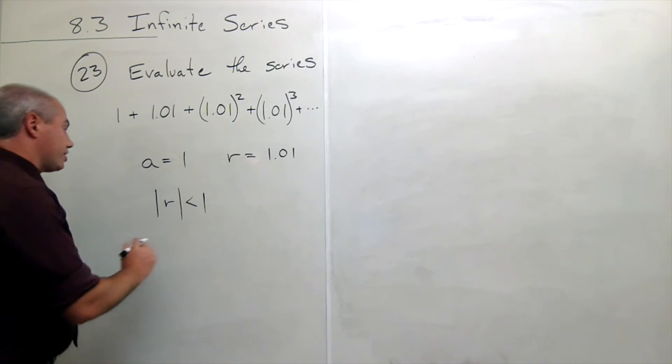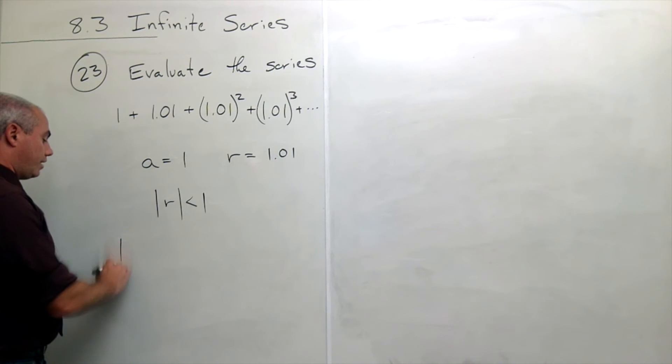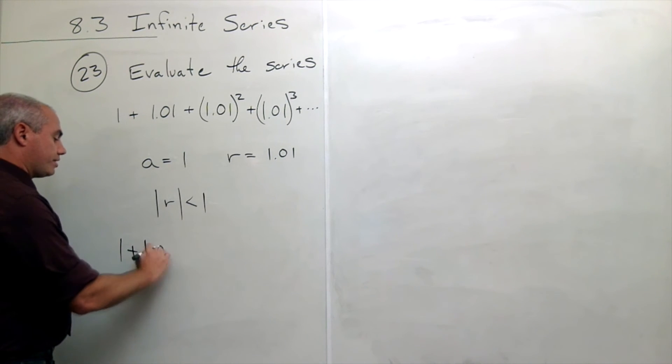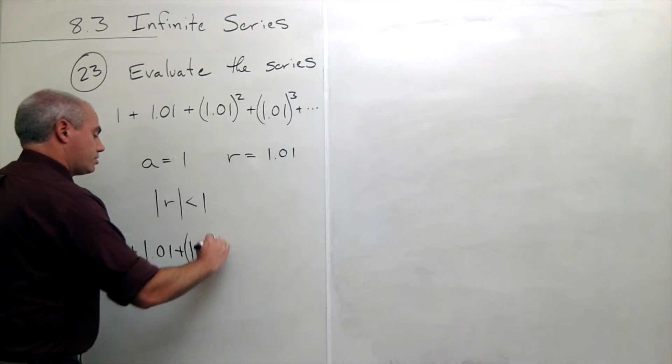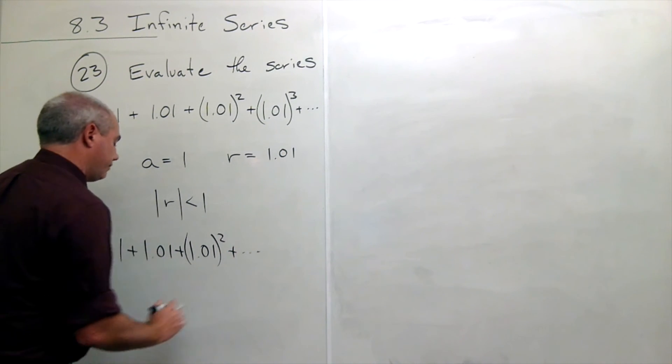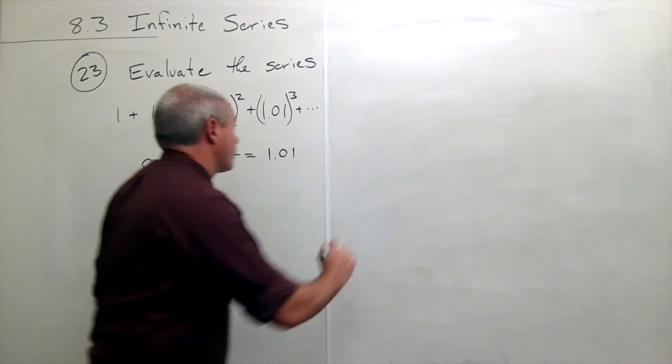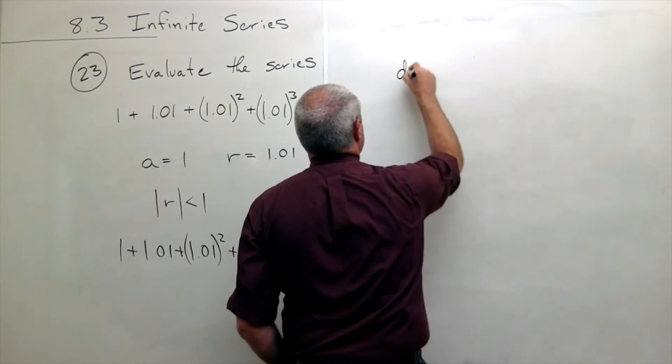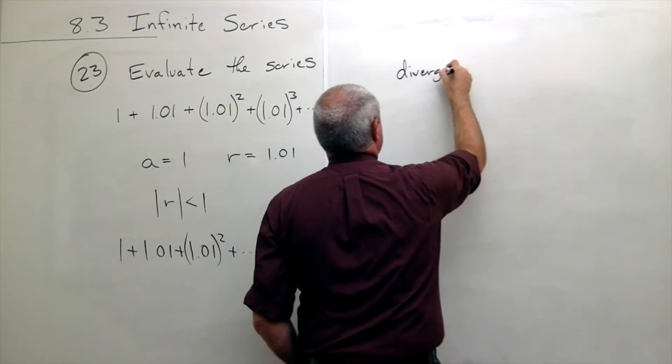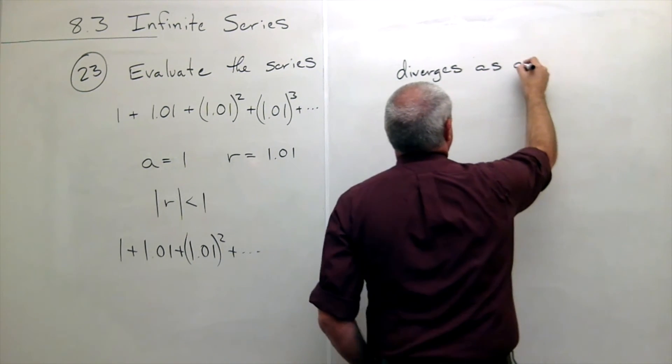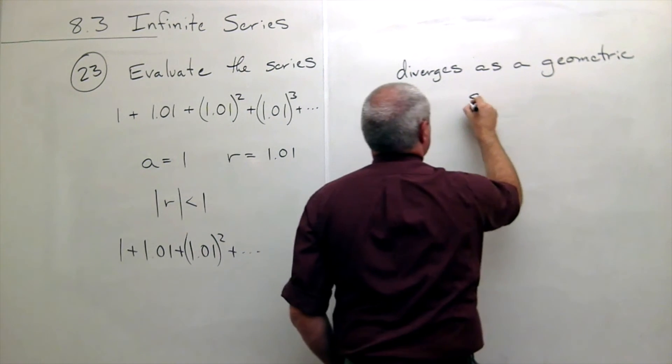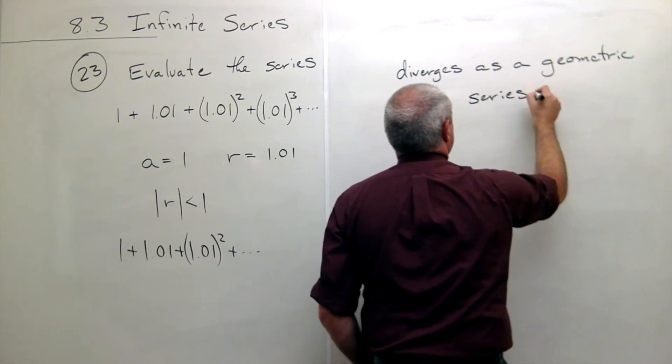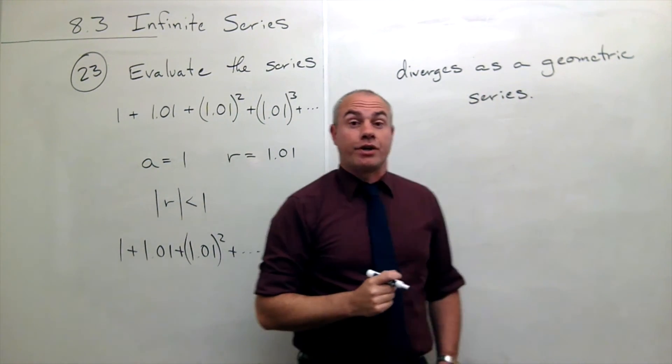So we can just say that 1 plus 1.01 plus 1.01 squared plus and so on diverges as a geometric series. And we are done.